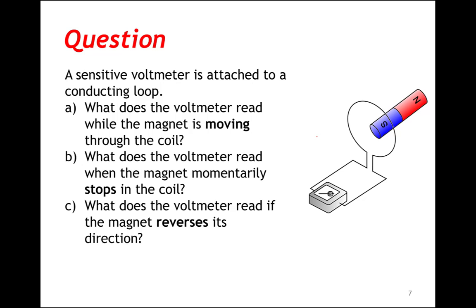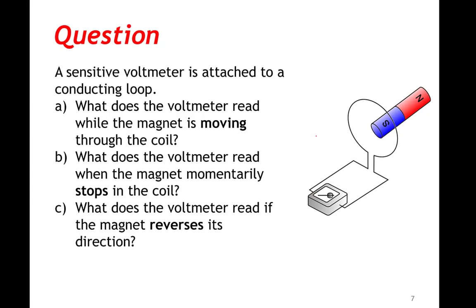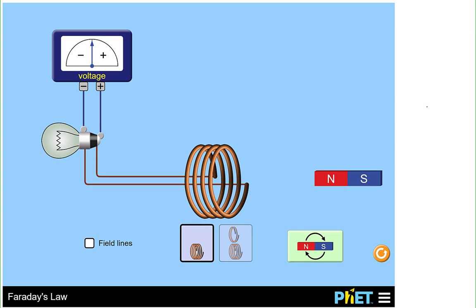To do this, I'm going to turn to a simulation. What we have in this simulation is a bar magnet and a conducting coil that's attached to a voltmeter and a light. There is nothing else attached — no battery, no power supply.